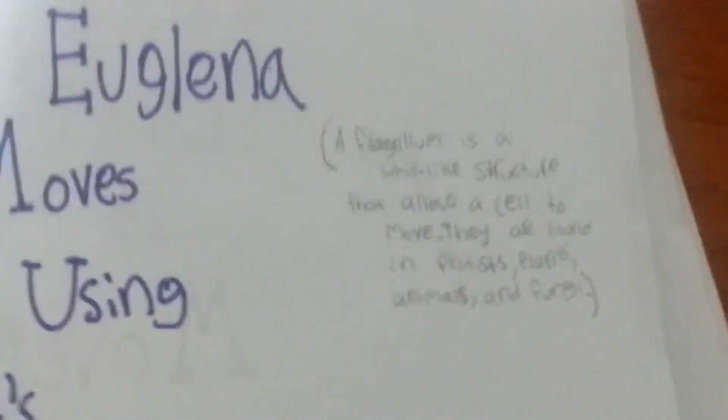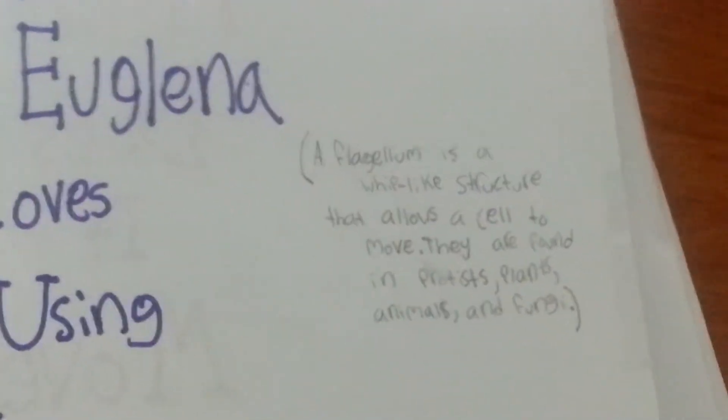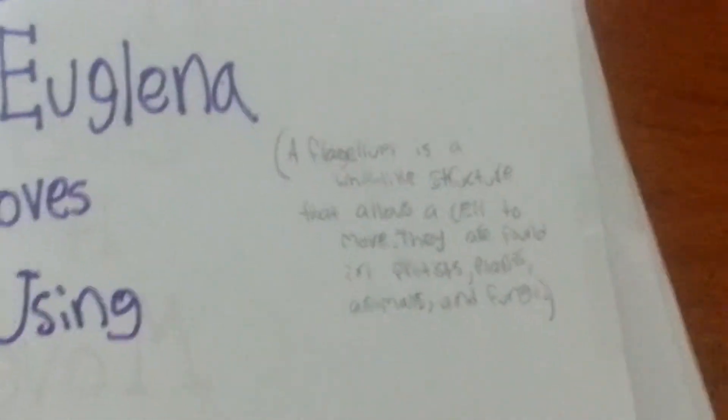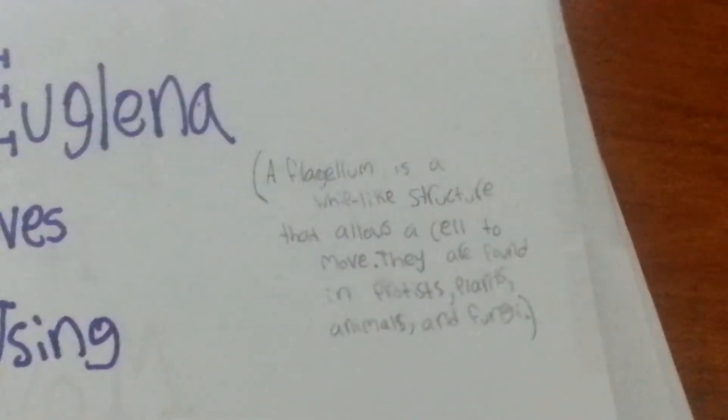A flagella is a whip-like structure that allows the cell to move. They are found in protists, plants, animals, and fungi.